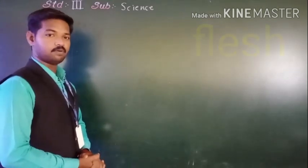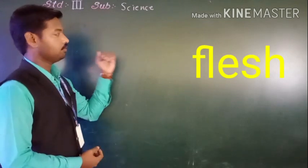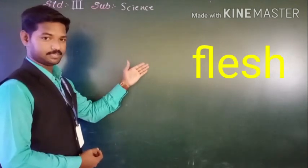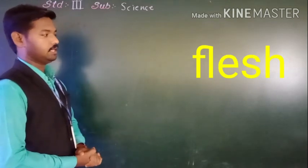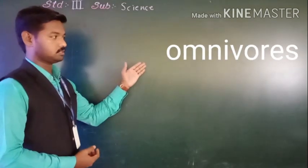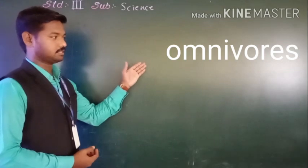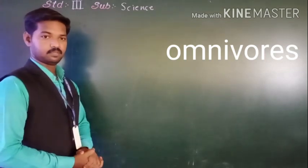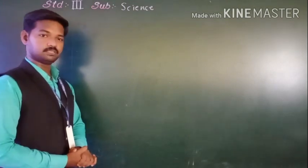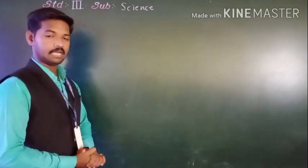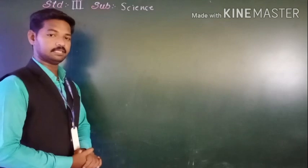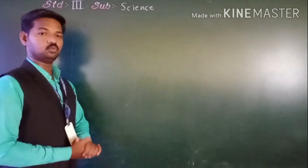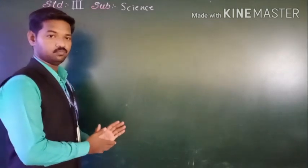Number five, flesh. Number six, omnivores. So these all words you have to copy down as well as you have to underline these all words in your textbook. As well as today you have to recite these all words.